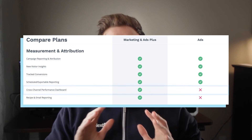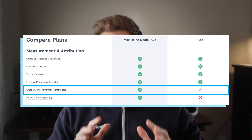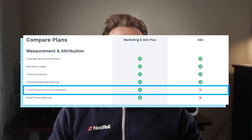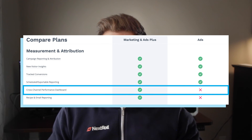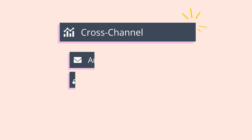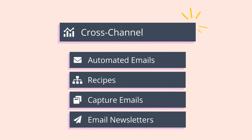And that's the cross-channel performance dashboard. As a note, this feature is only available to Marketing and Ads Plus users. So if you want to see the holistic impacts of your marketing campaigns and save time with a unified dashboard, I highly recommend you head over to AdRoll.com to learn more. As a bonus, if you sign up for Marketing and Ads Plus, you also get access to a suite of other premium features like automated email, newsletters, contact capture, and much more.